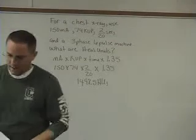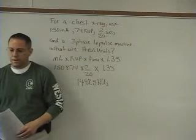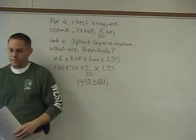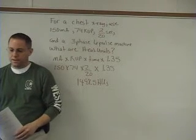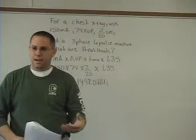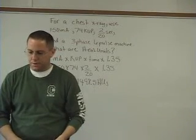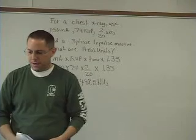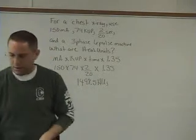All right, on page 80 of the book, there's some charts. They're called tube rating charts. And these are just basically charts that you use to see how the three different numbers that you put into the x-ray machine all correlate to each other. You have, for example, the MA, the KVP, and the time for different types of x-ray machines on those charts.